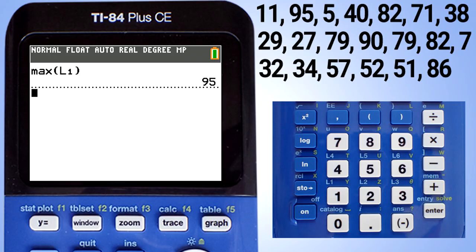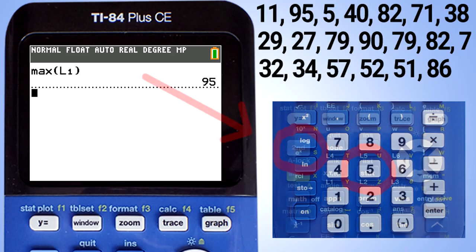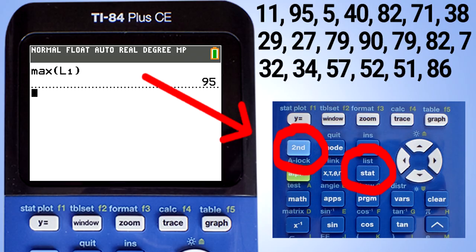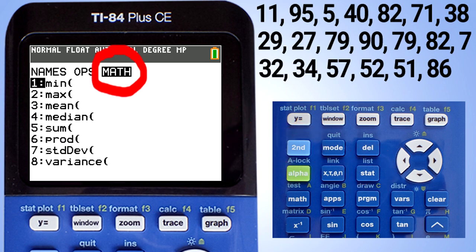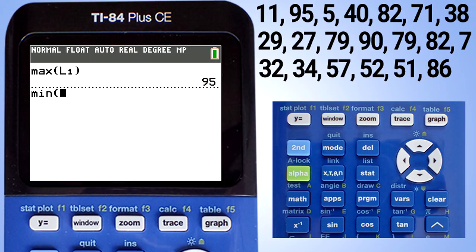Now we need to find the lowest number in our data set. Press the second button and list button again. This screen appears again. Go to the math tab. What we want is already highlighted, the minimum. Press the enter button. This window appears.